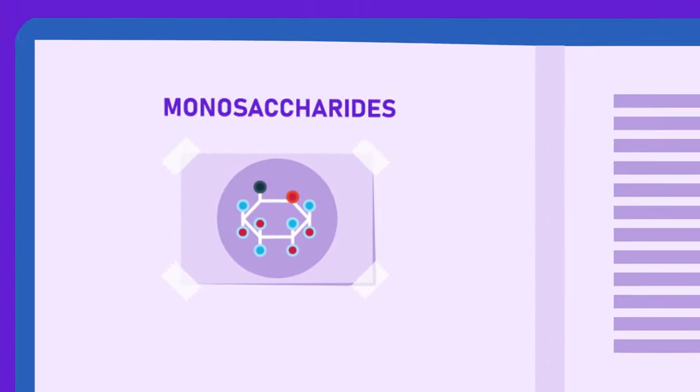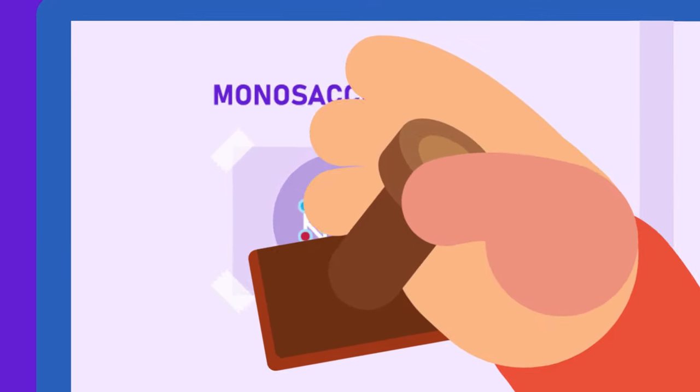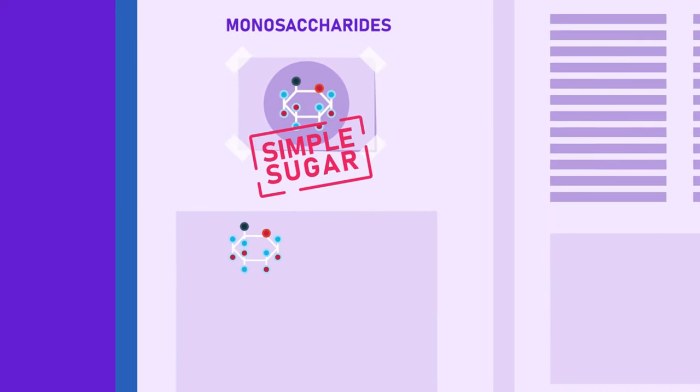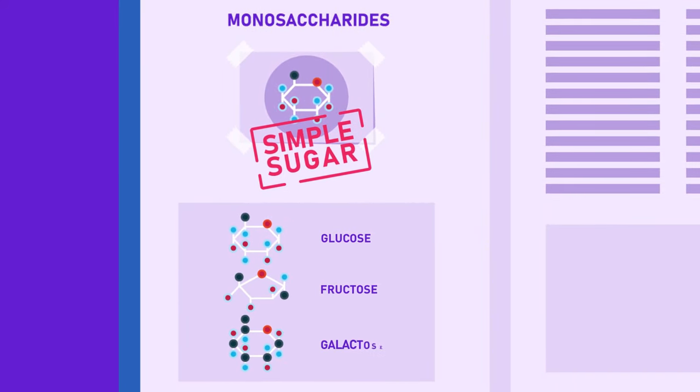Monosaccharides have a simple chemical composition, and therefore known as simple sugars. Examples of them are glucose, fructose and galactose.